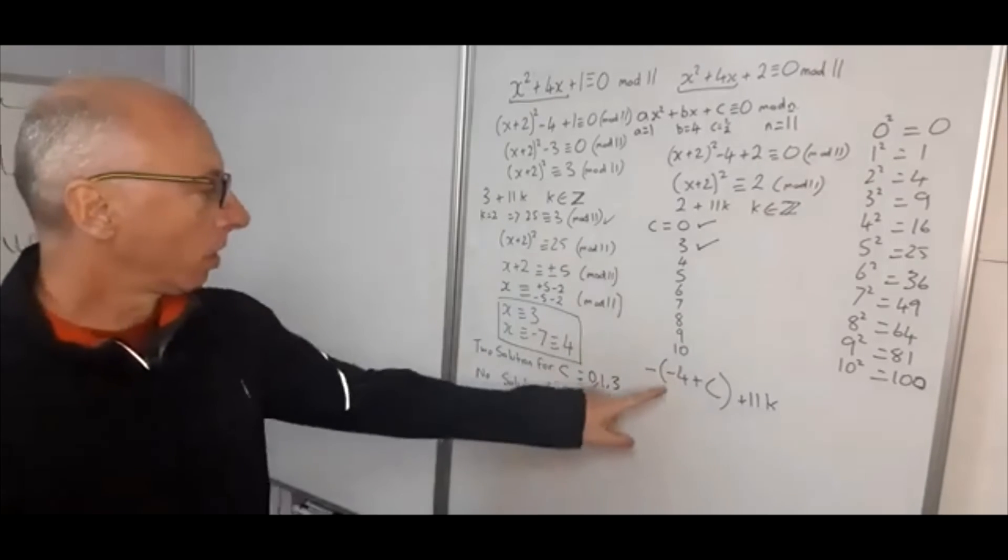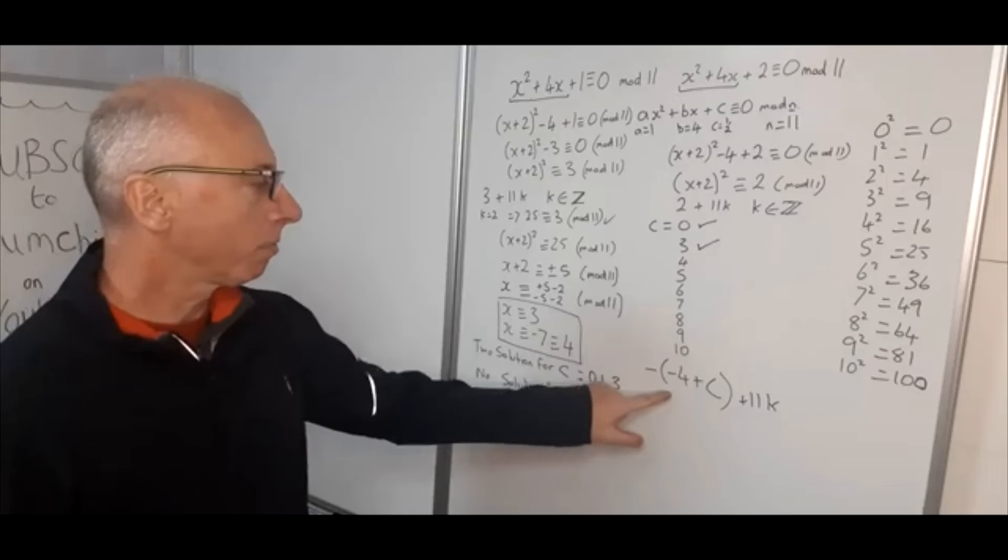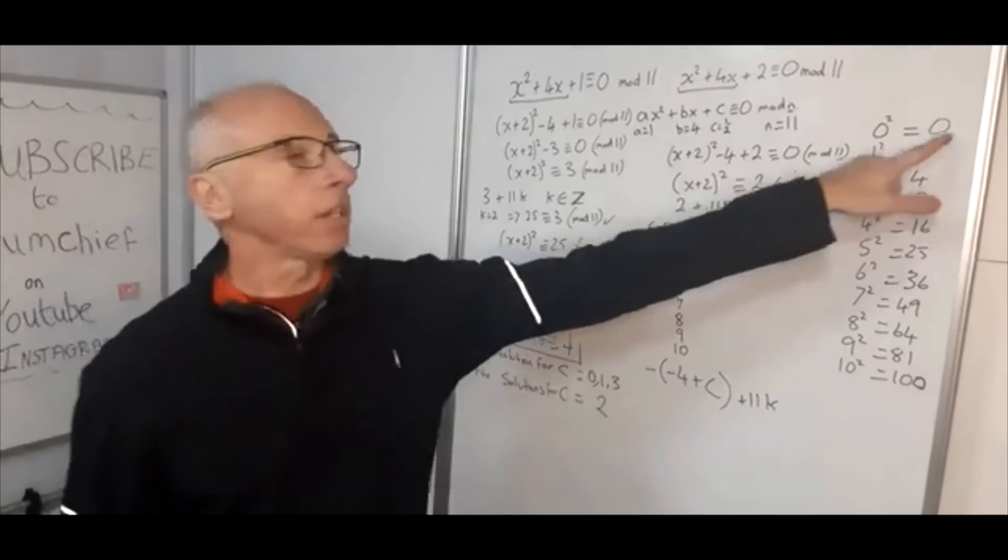Let's write that down on here. Now let's try 4. Minus 4 plus 4 is 0, minus of 0, 0 is in here.